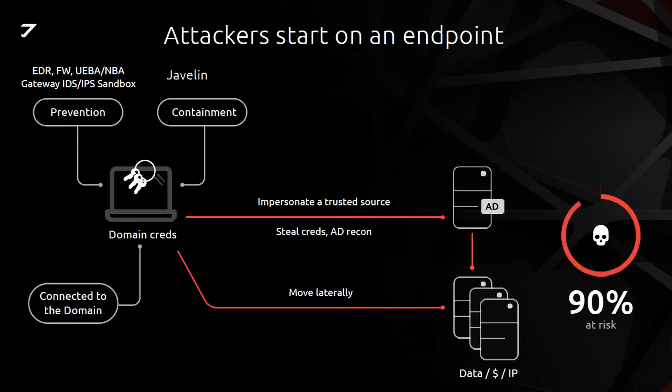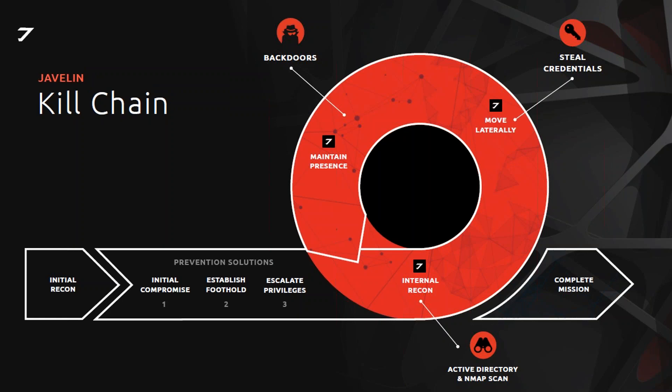Javelin sees an excellent opportunity to drive containment methodology during the attack process by interfering with the attacker's ability to learn the Active Directory environment. We complement existing security controls by driving forensic and containment technologies in the middle of the attack process. We make a few key assumptions in deploying Javelin — most importantly, that the attacker is going to compromise an endpoint that isn't detected.